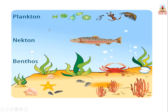Plankton includes both microscopic plants, like algae, and animals, like crustaceans and protozoans such as zooplankton, which are found in aquatic ecosystems except in certain swift-moving waters. The locomotory power of plankton is limited, so their distribution is controlled largely by the currents in aquatic ecosystems.